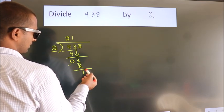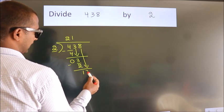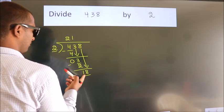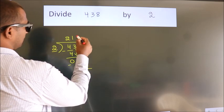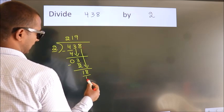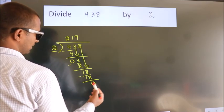After this, bring down the beside number, so 8 down, so 18. When do we get 18? In 2 table, 2 9s, 18. Now we subtract, we get 0.